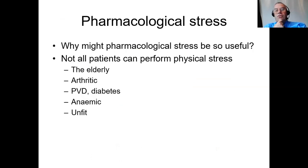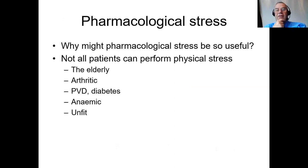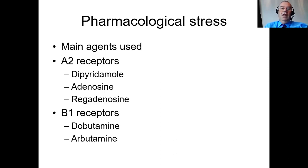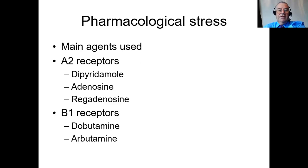We've moved to pharmacological stress, particularly for patients who can't do physical stress - the elderly, those with arthritis, peripheral vascular disease, diabetes, anemia, those being assessed for renal transplant, and the generally unfit. If you think of your average patient with heart disease, they fit into one of those criteria, so many centers have abandoned exercise ECG. For pharmacological stress, the main agents are the adenosine receptor agents: dipyridamole, adenosine, and regadenoson - a very expensive form of adenosine that doesn't have the peripheral side effects. For beta-2 receptors there are inotropics: dobutamine and its expensive cousin arbutamine.